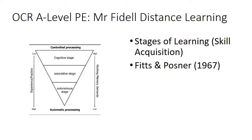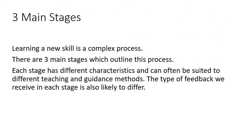So as I mentioned, we're looking at the stages of learning — the different stages when we're acquiring or learning a skill. A lot of this relates to work done by Fitts and Posner around their ideas about how skills are learned. Learning a new skill is a very complex process, but there are three main stages which outline this process, each with different characteristics and often suited to different teaching and guidance methods. Linked with the stages of learning is the type of feedback received at each stage, which we'll look at in further detail as we go through the course.